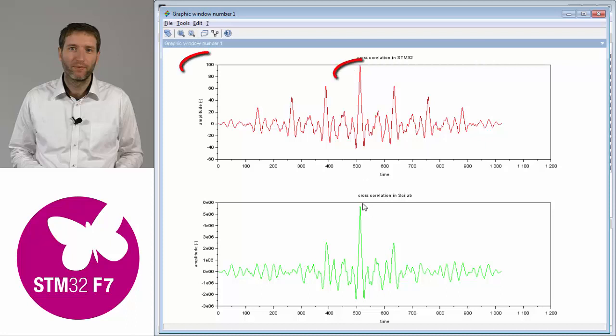The only difference can be the amplitude. You see 100-something and 5 million-something in the PC. This is because the STM32 CMSIS library function truncates every result to fit into 16-bit values. We're working with 16-bit numbers, so every intermediate result must fit into 16-bit value. It's truncated every single addition. While here we're keeping the full scale of all the numbers, so we don't need to take care about the scale. But what is important is the maximum and where the maximum is.